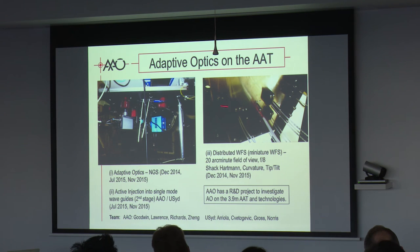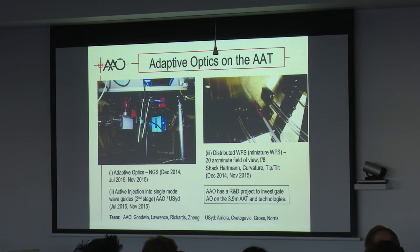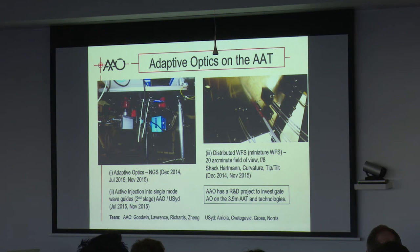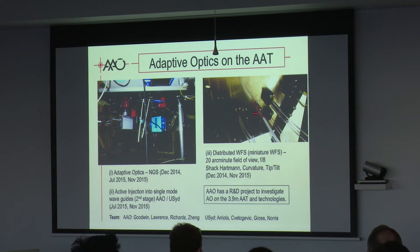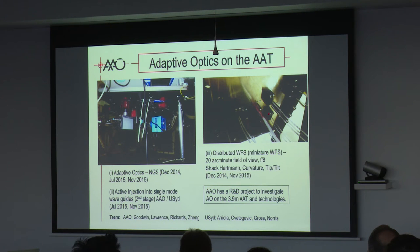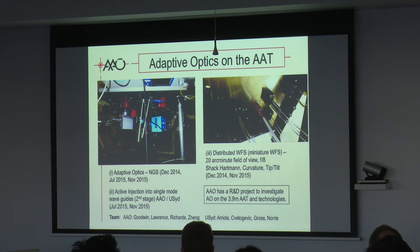This is some of the adaptive optics work we've done on the AAT. We had several short runs of director's time. We have the AO system on the Cassegrain ground focus of the AAT, and we're also looking at distributed wavefront sensors — since it's a Cassegrain focus we have a 20 arcminute field. We're looking at ground-layer AO and multi-object AO using wavefront sensors that use polymer bundles, and also active injection where a second-stage AO system feeds into single-mode waveguides.